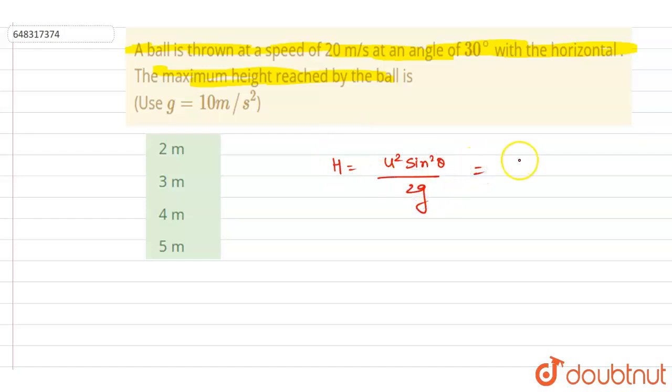So it is 20 squared into sine squared 30 degrees in division 2 into 10. So this 20 and 20 will get cancelled out.